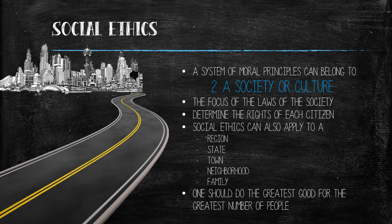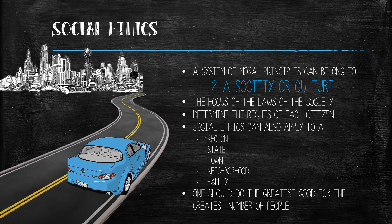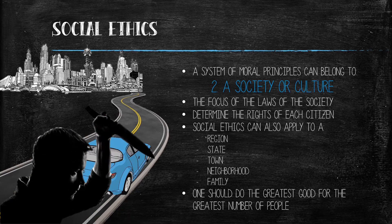Abiding by driving laws, like using your turn signal and going the speed limit, are set in place with the goal of preventing as many car accidents as possible. Here's another example: killing someone is against the law in our society because murder is generally considered by our population to be morally wrong.